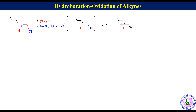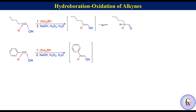The next example is hydroboration oxidation of phenylacetylene. Here also, H will add to the internal alkyne carbon while OH goes to the terminal carbon to produce 2-phenylethene-1-ol, which tautomerizes to the more stable keto form, 2-phenylacetaldehyde.